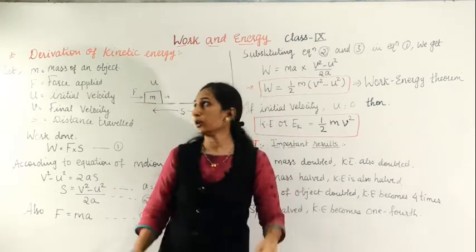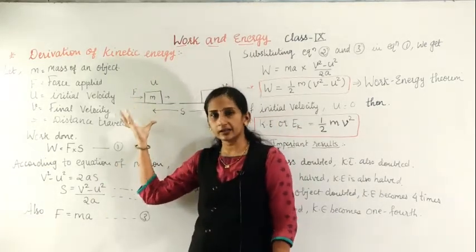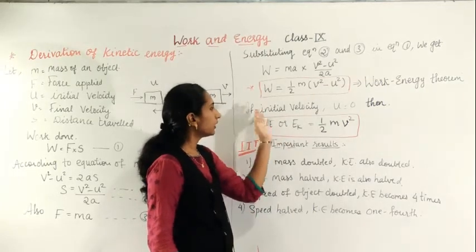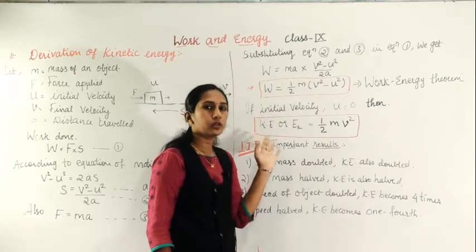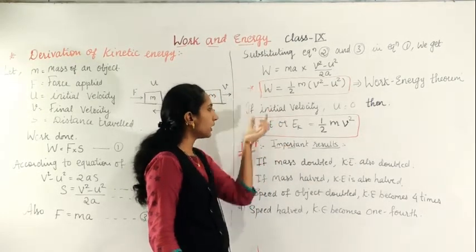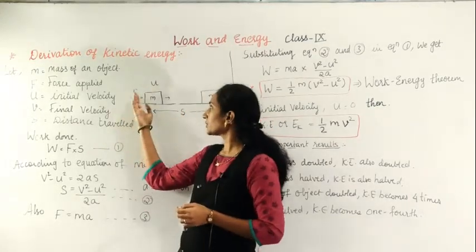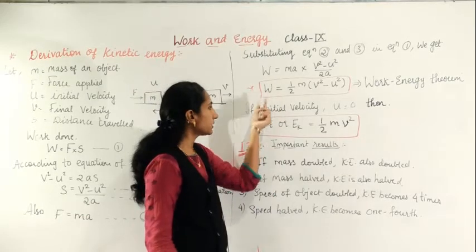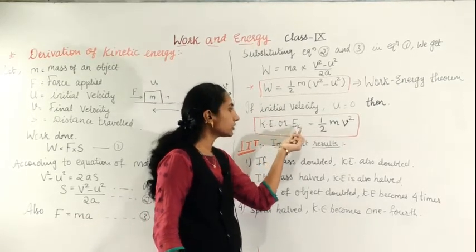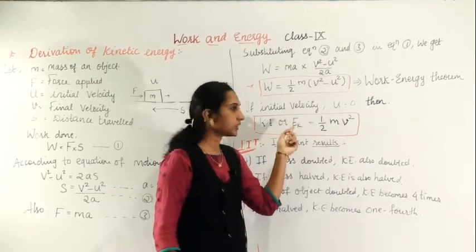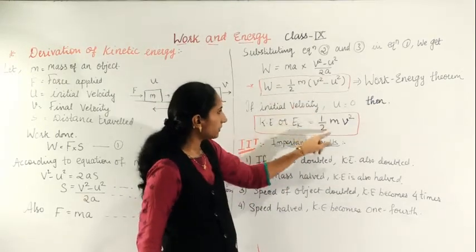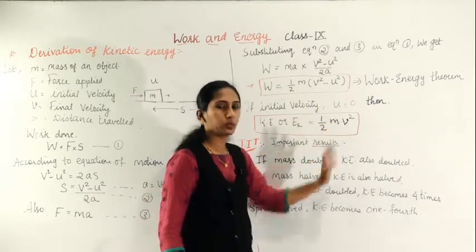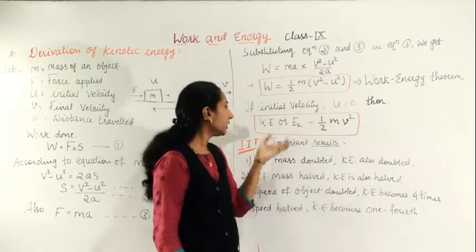To derive kinetic energy, consider the object starting from rest, so initial velocity u = 0. Also, work done is equal to kinetic energy, so we replace W with KE. Substituting u = 0, the u² term cancels, giving KE = ½mv². This is the kinetic energy formula.